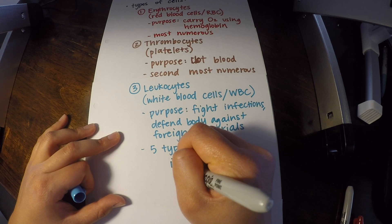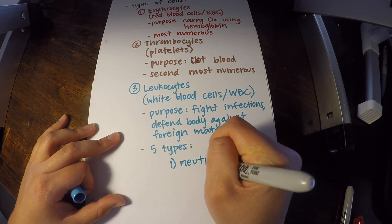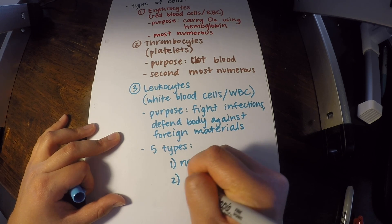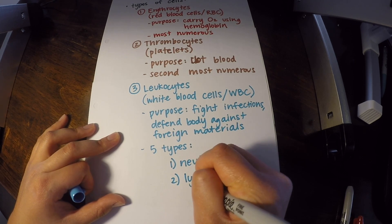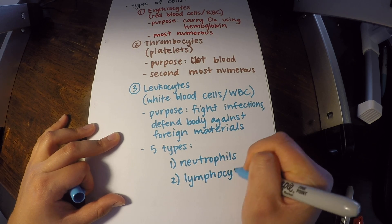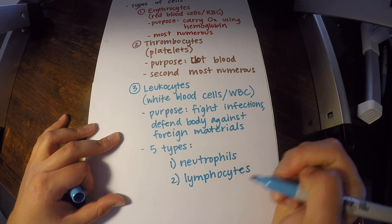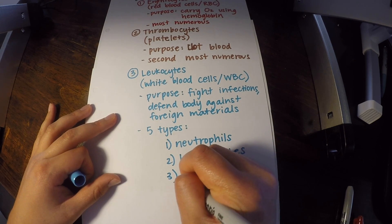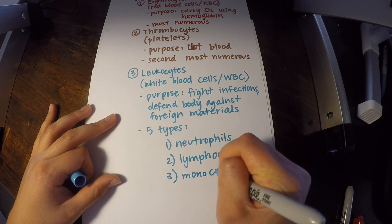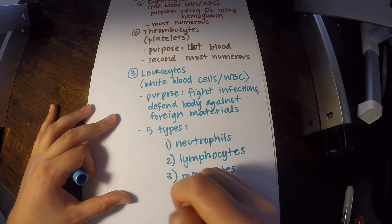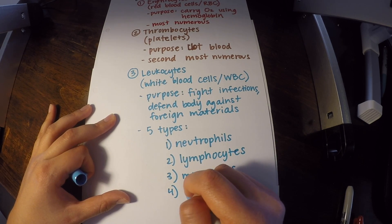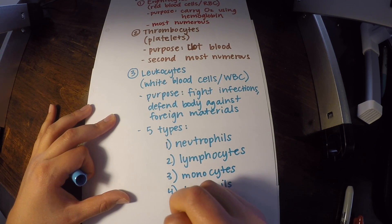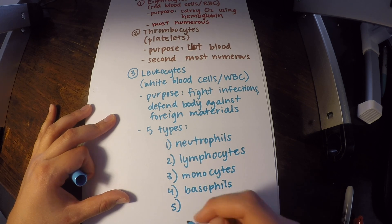The first one is neutrophils. The second is lymphocytes. The third is monocytes. The fourth is basophils. And the last type is eosinophils.